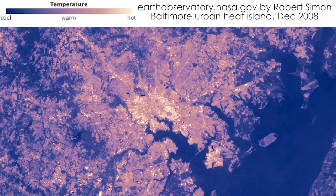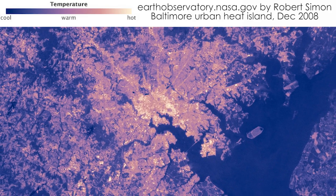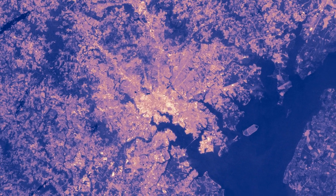Urban areas are warmer than rural surrounds, and it's called the urban heat island because it tends to show up like an island of heat. If you think of a city, you have urban areas and then perhaps grasslands and pastures surrounding it, and you get this island of heat in the middle.